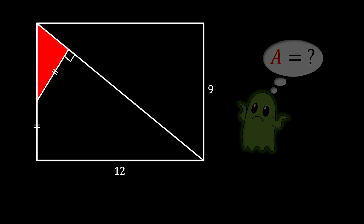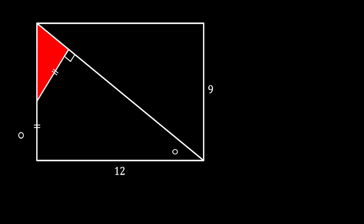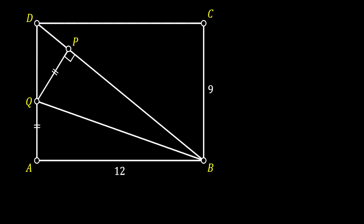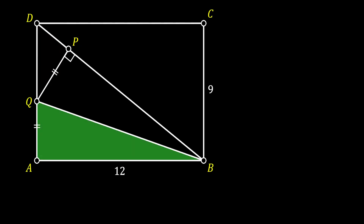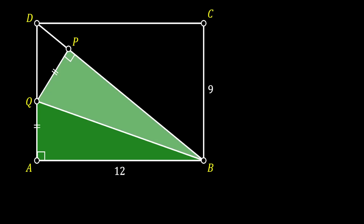We're going to start by labeling all the vertices of our rectangle as A, B, C, and D. Then we will label the remaining vertices of our red triangle as P and Q. Now let's draw a line from point B to point Q. In this way, as you can see, we have formed two right triangles: the right triangle QAB and the right triangle QPB.